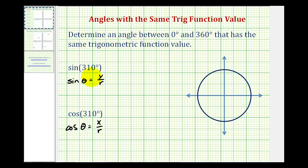So let's go ahead and sketch our angle of 310 degrees. Here's the initial side and then we'd rotate counterclockwise 310 degrees. This would be 270 degrees, so we need to rotate 40 degrees more — maybe somewhere in here. So the angle might look something like this, and notice how the reference angle would be 50 degrees right here.